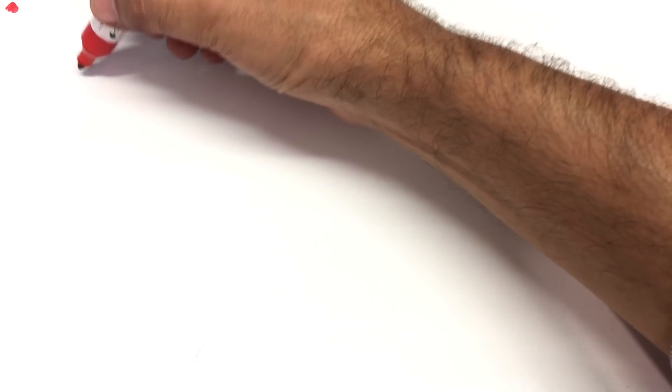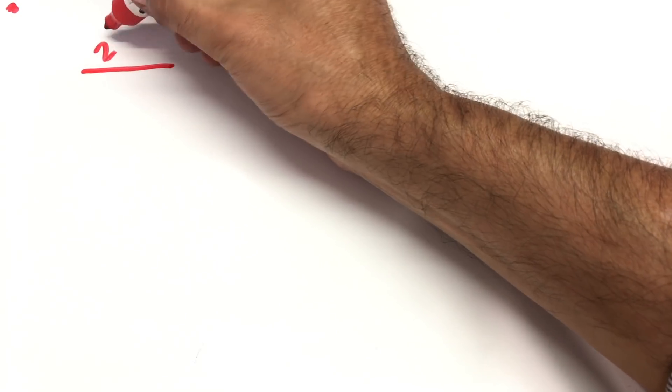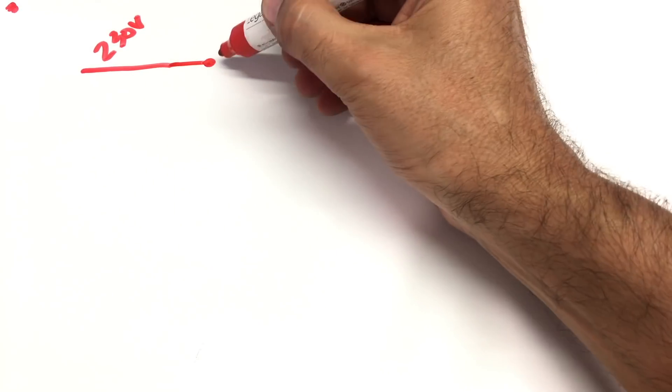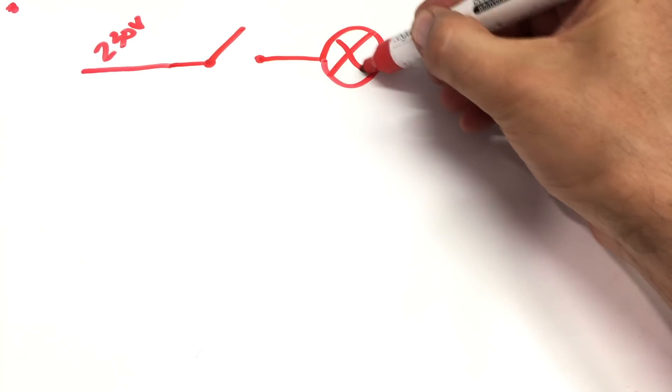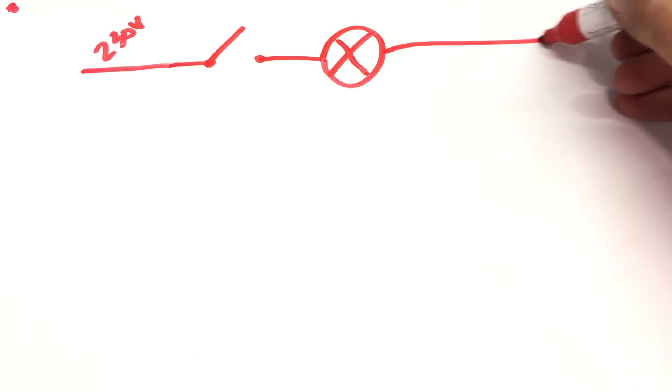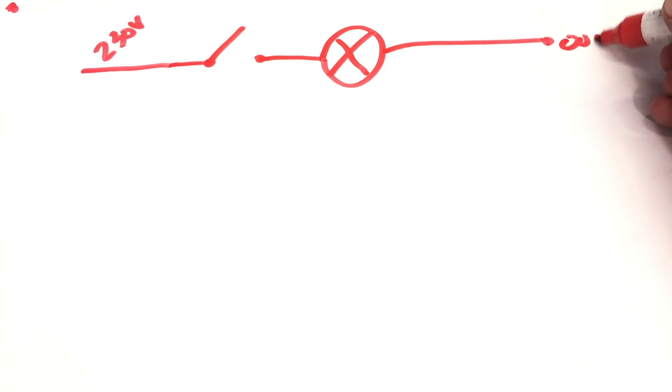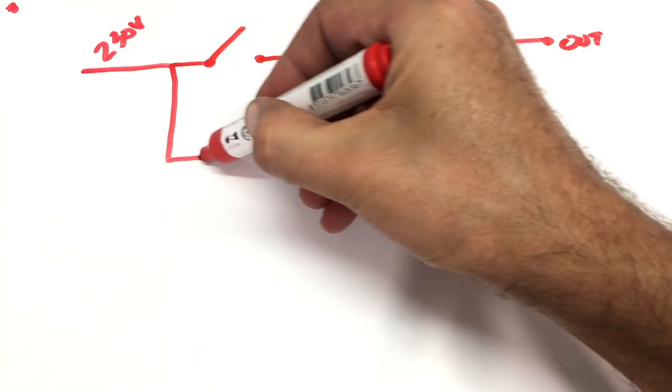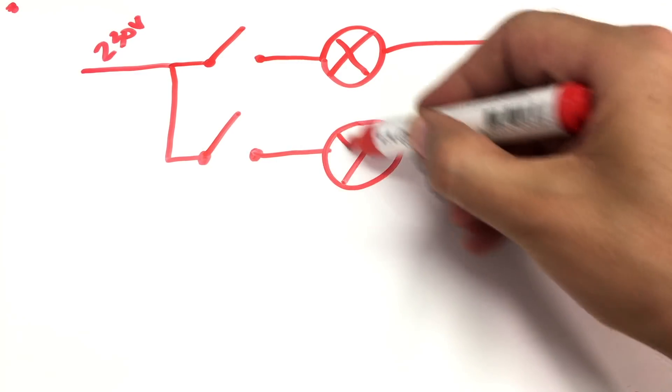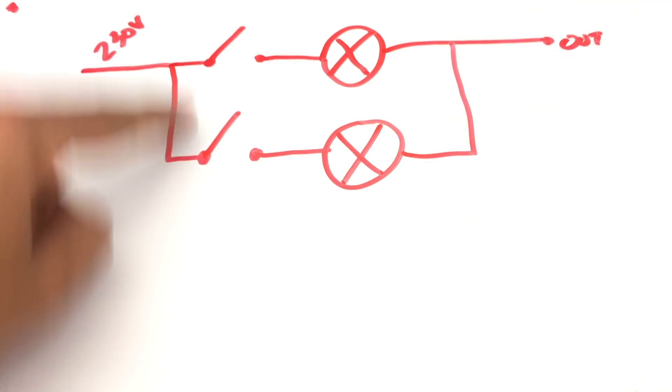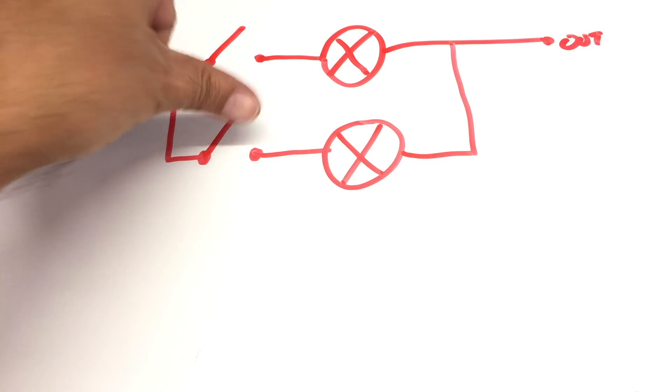If you've got mains coming in here, 230 volts, it meets the switch, then it meets a light bulb, and it goes there to your output. And we have another one here. Because we want to parallel them. What happens when I close the switch?